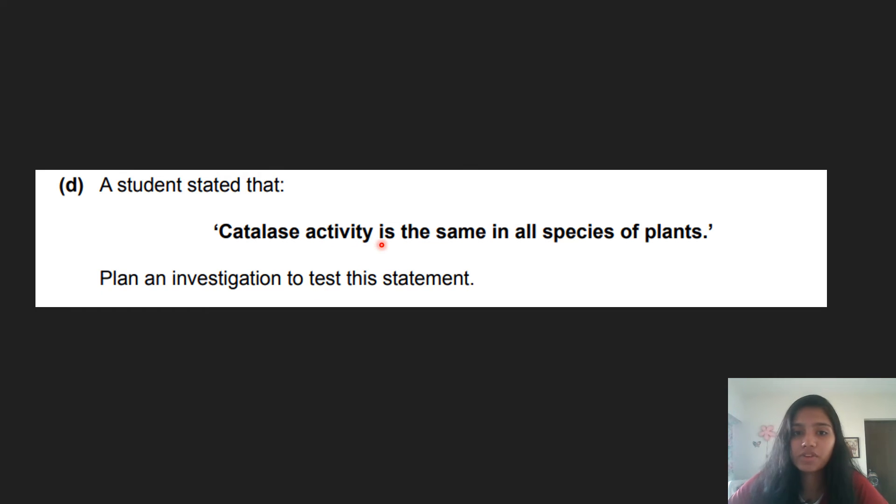So now here the question is: Catalase activity is the same in all species of plants. That's the hypothesis. So plan an investigation to test the statement. So now here we're going to look at the dependent variable and the independent variable. Catalase activity is the same in all species of plants. Now here you can see that catalase activity, you're only using one variable. And here it says all species of plants. Now this keeps changing. You know that this is the independent variable. Since the species of plants are going to keep changing in the experiment, you know that it's the independent variable. Because it has an effect on the dependent variable which has to be catalase activity. So here you will get your dependent variable mark, independent variable mark. And now we're going to look at how to solve this question.